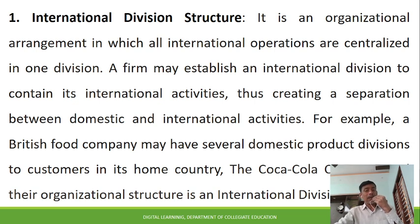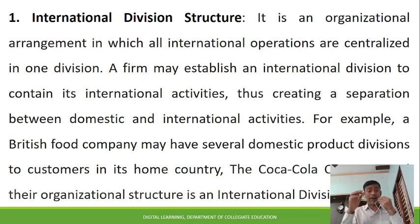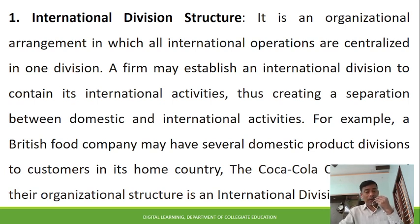For example, a British food company may have several domestic product divisions serving customers in its home country, with a separate international division managing foreign operations. Another example is Coca-Cola, whose structure includes an international division. This separation of domestic and international operations is a key feature of this structure.